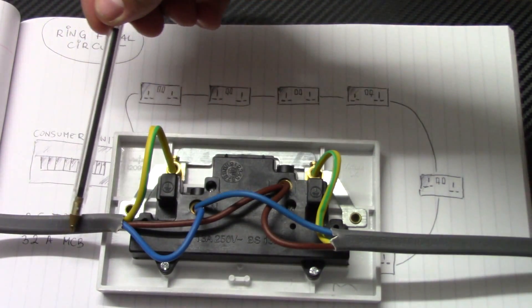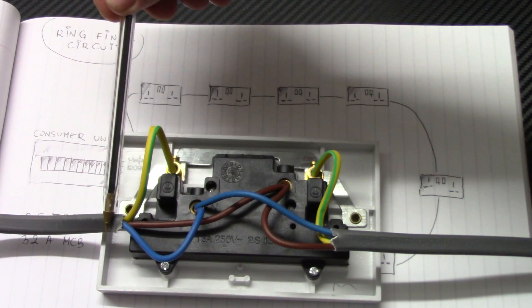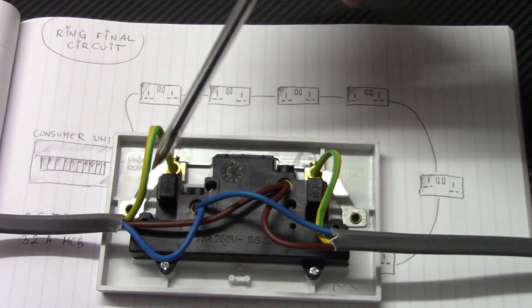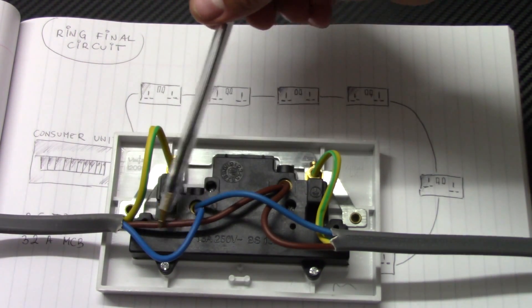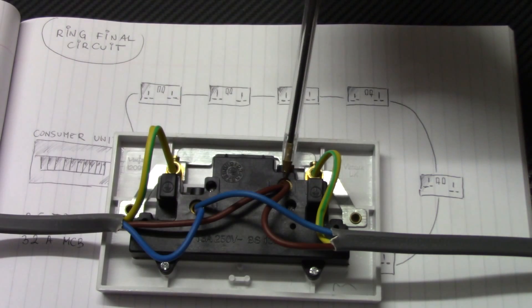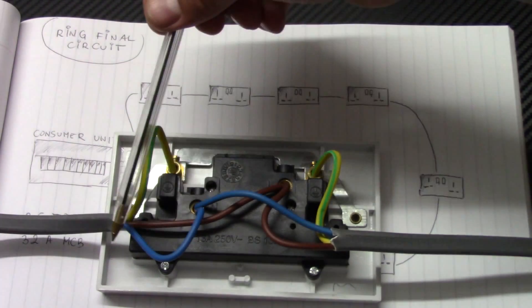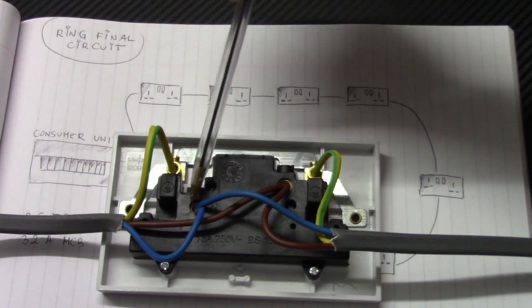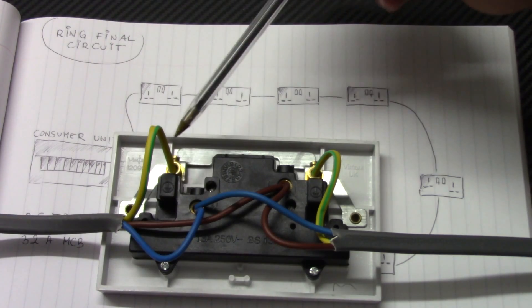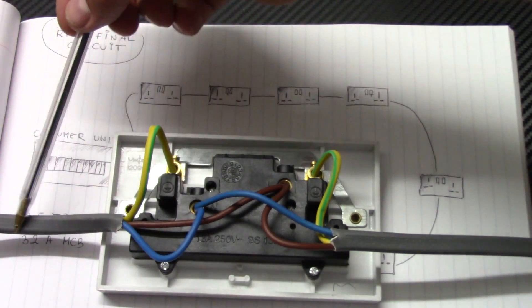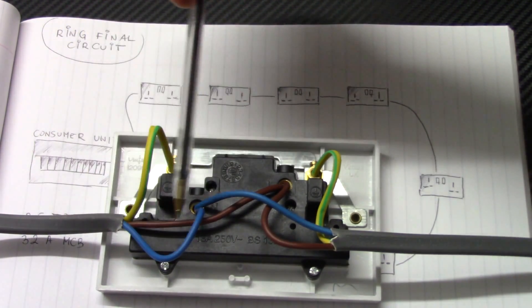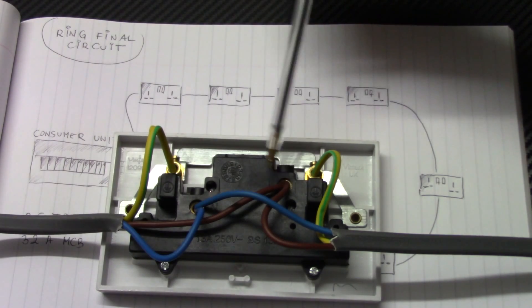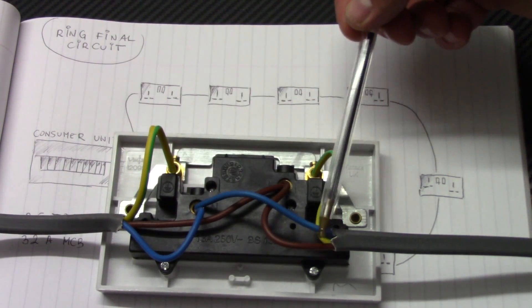Let's say this is coming from consumer unit or another socket. Obviously all brown wires, live, are connected to live terminal. All neutral wires are connected to neutral terminals. The earthing to earth terminal. So cable comes from consumer unit, comes to the socket, and then splits here to another socket.